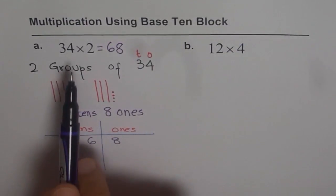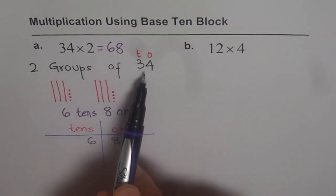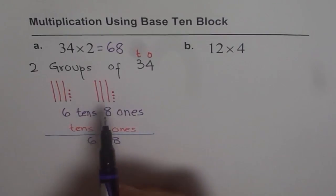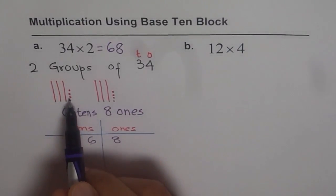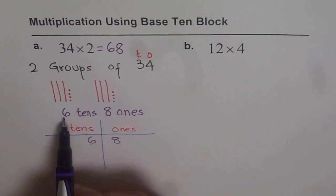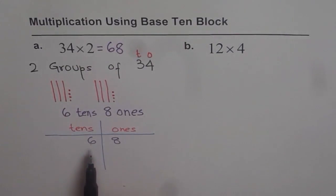Isn't that simple? 34 times 2, 2 groups of 34. In base 10, we can write this as 3 tens and 4 ones. Now we have 2 groups. Count them all. So you get 1, 2, 3, 4, 5, 6, 7, 8, 8 ones and 1, 2, 3, 4, 5, 6, 6 tens. So the number is 68. Okay?